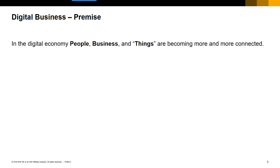In the digital economy today, your businesses are made up of people and processes, and then you also have this new concept of things — the products that a business makes, and the equipment that a business uses. All of these different components are becoming more and more connected.